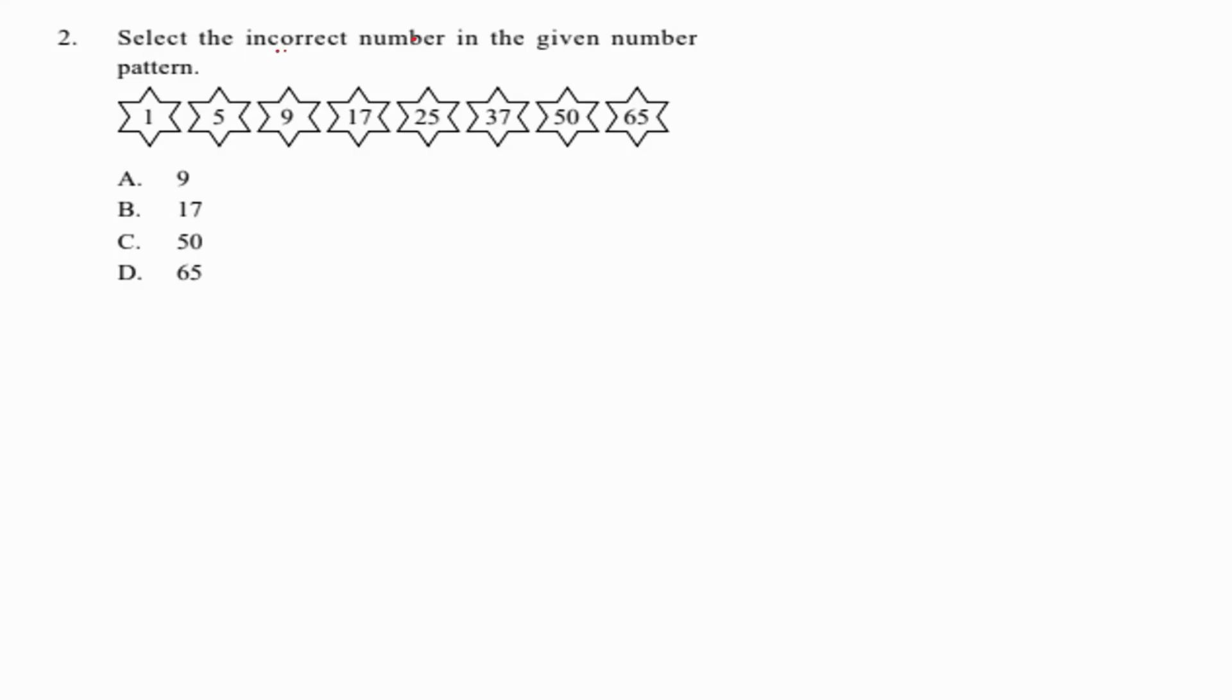Moving to the next question, this is a question from patterns or number sequence. You have to select the incorrect number in the given pattern. The sequence is 1, 5, 9, 17, 25, 37, 49, 65. The difference increases by 4, 4, 8, 8, 12, 12, 16 - basically increasing in multiples of 4, repeated two times each. At position 49, it should be 50, so 50 is the incorrect one.